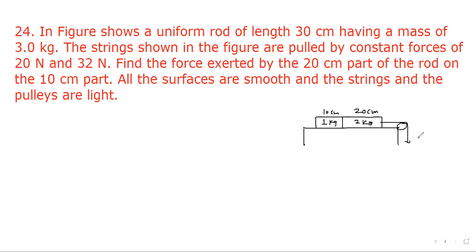And the strings shown in figure are pulled by constant force of 20 newton and 32 newton. Here the situation is, this force is 32 newton and here there will be 2 kg, and this force is 20 newton. Now net force on this block will be 12 newton towards the right. So net force equal to 12 newton towards right. So its acceleration will be a towards right. So acceleration a will be equal to 12 by mass is 3 kg, so that is 4 meter per second square.